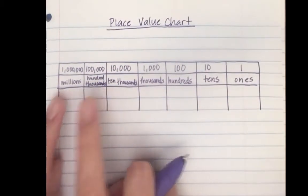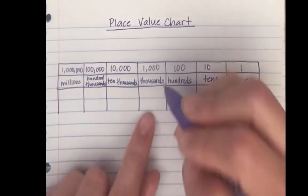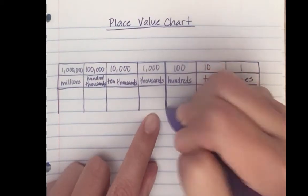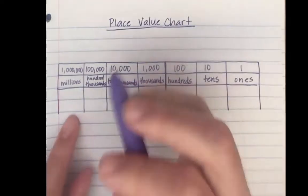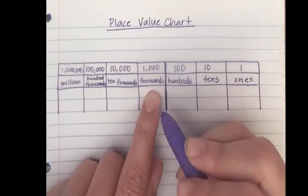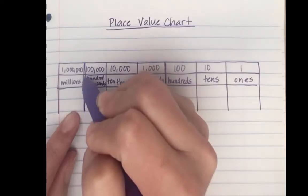I'm going to make this line a little bit bolder - one, two, three. Between the hundreds and the thousands, I made this line bolder. And between the hundred thousands and the millions, I'm going to make this one bolder.